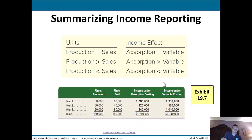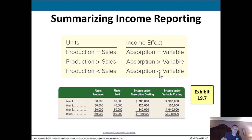To summarize income reporting: if production equals sales, absorption income equals variable income. If production is greater than sales, absorption income is greater than variable income. If production is less than sales, absorption income is less than variable income.